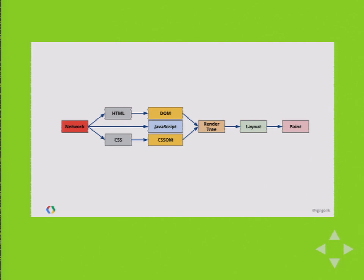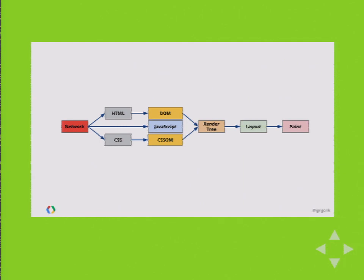This example is from Ilya Grigorik's talk on 1000 milliseconds. When a browser goes to get a web page, it sets up a TCP connection to make an HTTP request. It grabs the HTML, builds a DOM, and from the CSS it creates the CSS Object Model (CSSOM). The browser will not render anything until it has both pieces complete. It uses the DOM and CSSOM together to create the render tree, and eventually paint pixels on screen. JavaScript can also delay execution and is not required like the DOM or CSS.